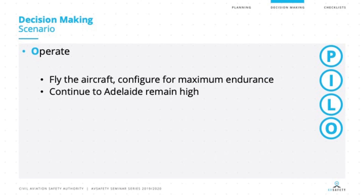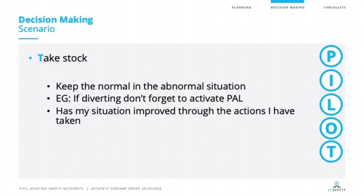In this circumstance, we've chosen to fly the aircraft configured for maximum range and continue high to Adelaide to give best glide ability. The last step is Take stock — but as noted, it's not necessarily the last step in a cyclic model. How has our situation changed? Importantly, keep the normal in the abnormal situation. When we've encountered abnormal situations, some routine things aren't at the forefront of our brain. Running through a bumps checklist on approach, or checking that the undercarriage is down in a retractable aircraft — that is keeping the normal in the abnormal by continuing to conduct those checks.